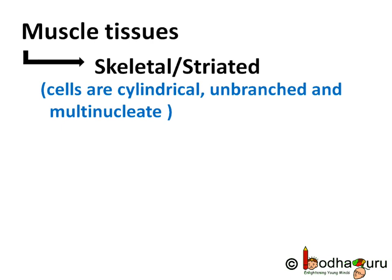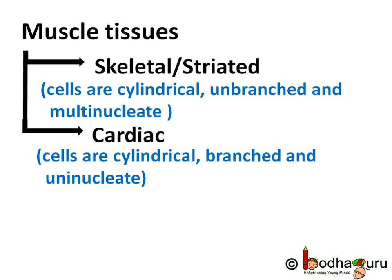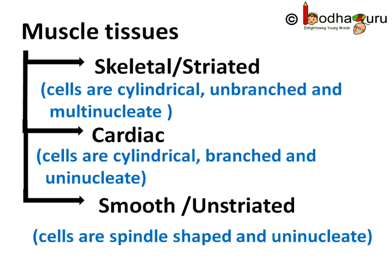In a nutshell, the muscle tissues are of three types. First, skeletal or striated tissues — the cells here are cylindrical, unbranched and multi-nucleate. The second type is cardiac, and it consists of cells that are cylindrical, branched and uninucleate. The third type is smooth or unstriated muscles, and these tissues consist of cells that are spindle-shaped and uninucleate.